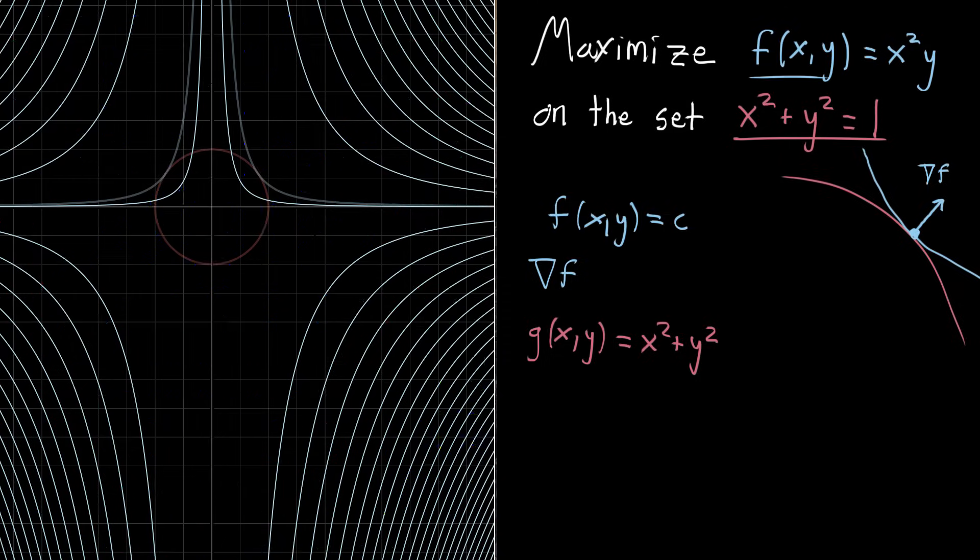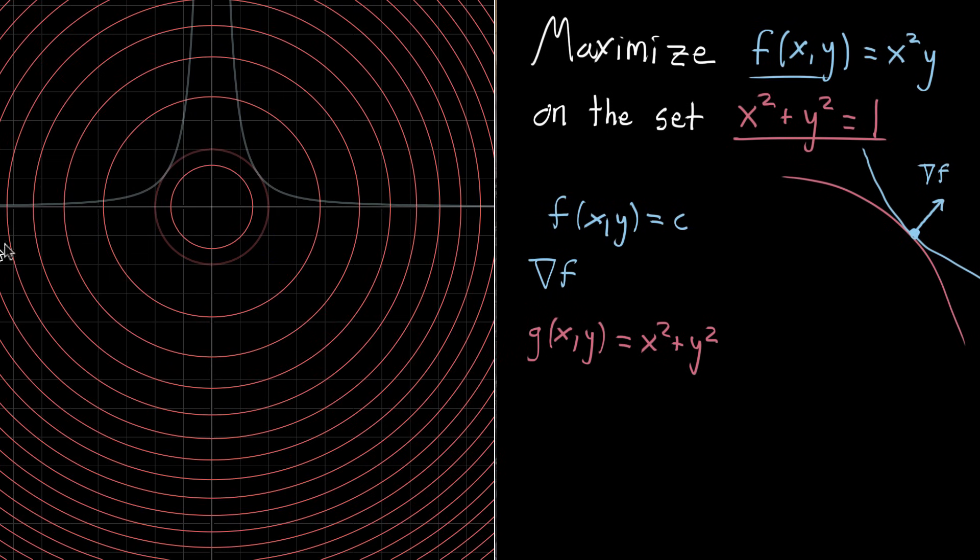And we can take a look at that. If we go over here and we look at all of the other contour lines for this function g, it should make sense that they're circles because this function is x squared plus y squared.